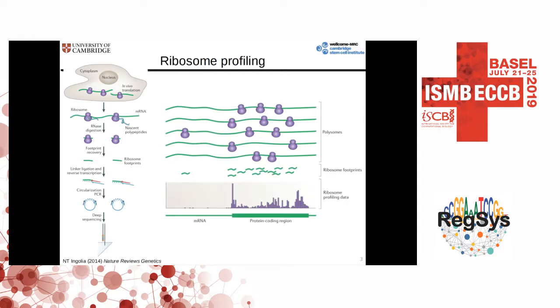I assume that you're all familiar with RNA sequencing. Ribosome profiling is a similar technique, but instead of building a library from the whole RNA pool, we subject the RNA to RNase digestion that will degrade any RNA that is not protected by a ribosome. Those ribosome-protected fragments are then converted into a library and sequenced using high-throughput sequencing. By mapping those reads to the reference genome, we get a snapshot of the active translation in the cells. Those reads will mark the coding sequence and they will roughly be correlated to the expression level of the gene.